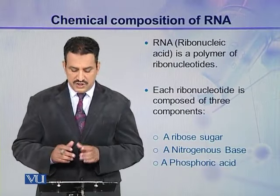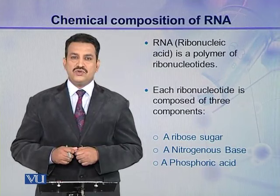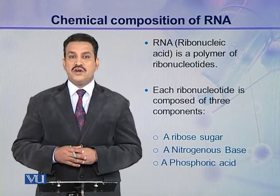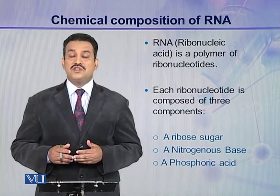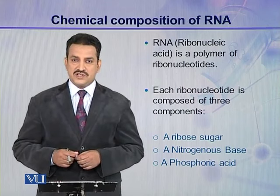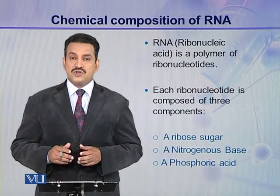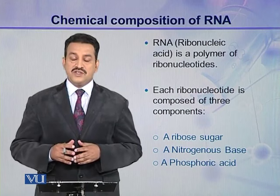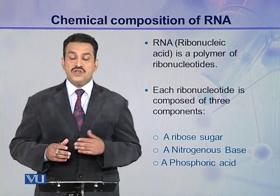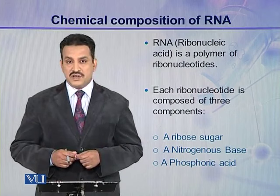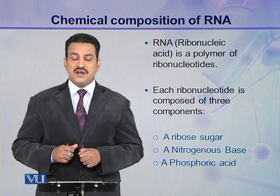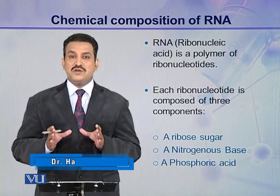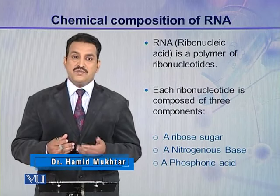In this module, I am going to discuss the chemical composition of RNA, or ribonucleic acids. This is another major type of nucleic acid present in the cells. It is also a polymeric compound just like DNA. DNA is made up of deoxyribonucleotides, but RNA is made up of ribonucleotides. So ribonucleotide is the monomer of ribonucleic acids.